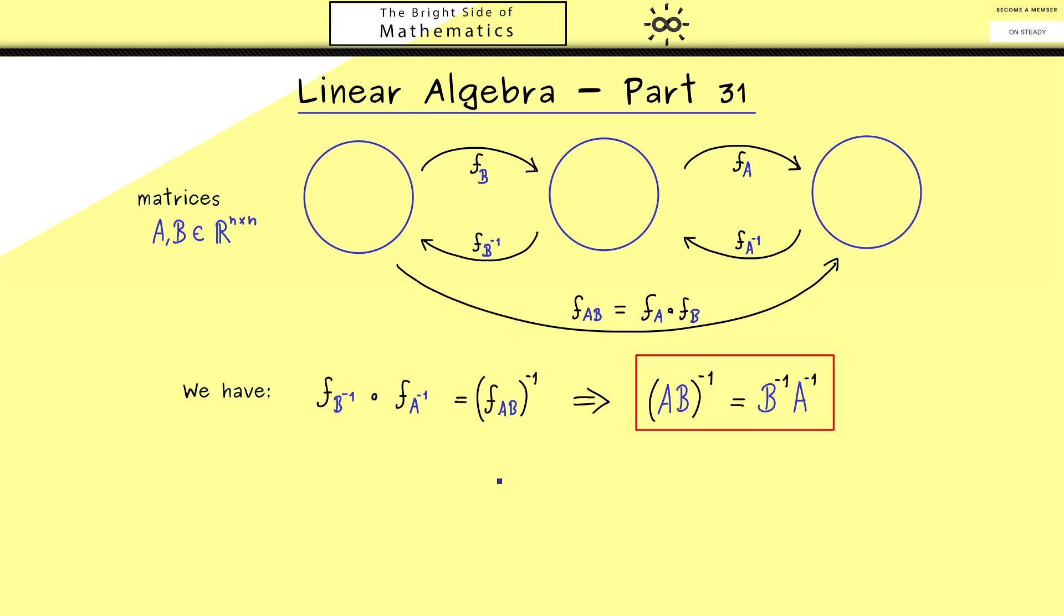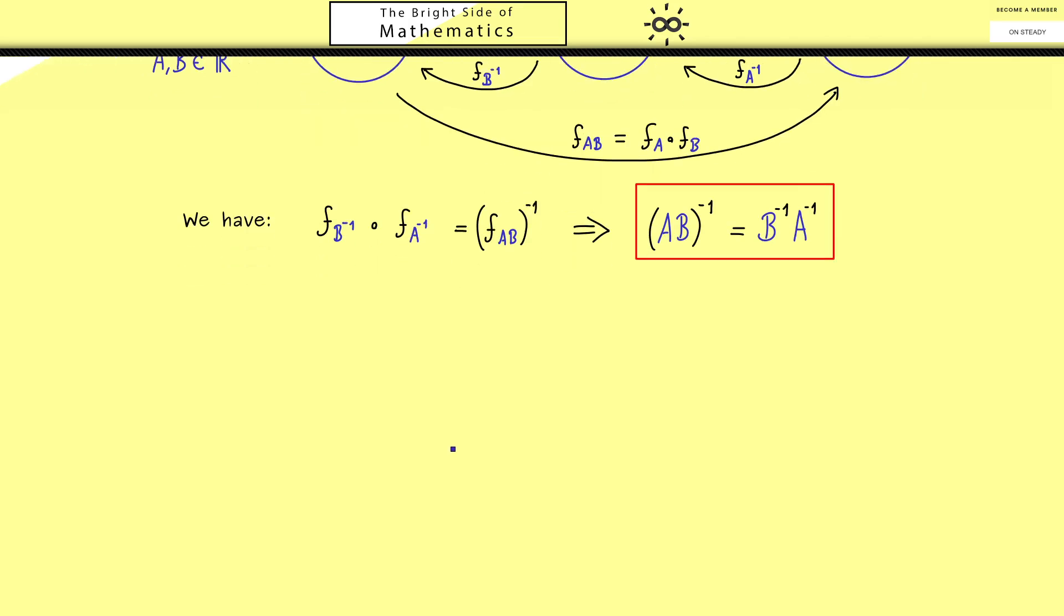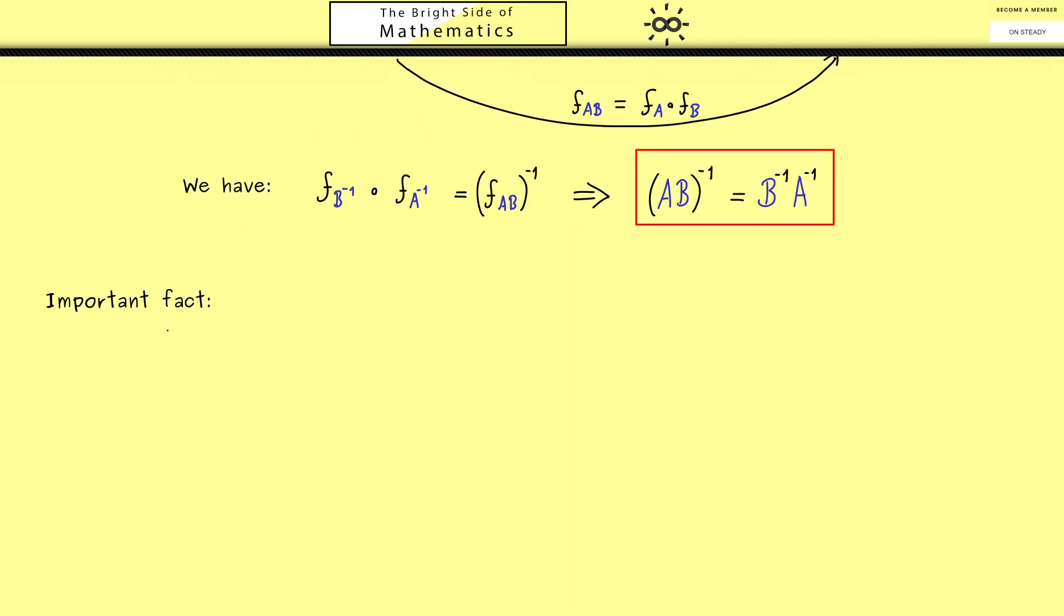Because now we want to prove that inverses of abstract linear maps are also linear. Therefore, let's state that also as an important fact. So the starting point is that we have a linear map from R^n into R^n. You already know a map is called linear if it conserves the linear structure of the vector space R^n. So it conserves the addition and the scalar multiplication.